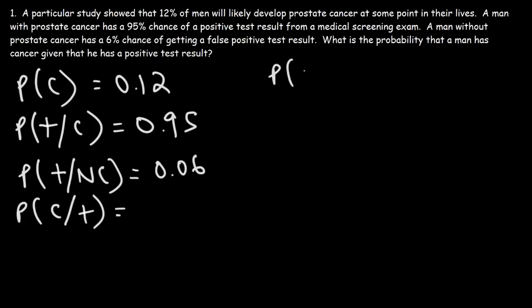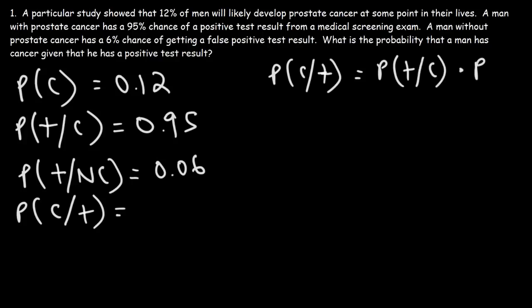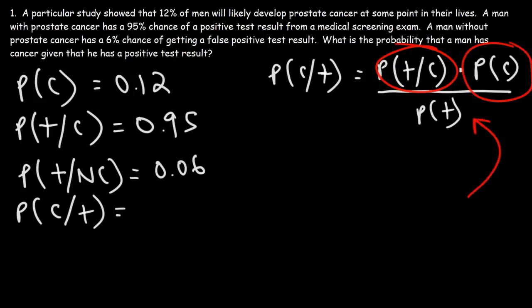So let's write down what we know. P(cancer) = 12% or 0.12. The probability of a positive test result given the person has cancer is 95% or 0.95. The probability of a positive test result given the person does not have cancer is 6% or 0.06. Using Bayes' Theorem, P(cancer|positive) equals the reverse conditional probability — P(positive|cancer) times P(cancer) — divided by P(positive). We have the first two values, but we need to find P(positive). A tree diagram will be very helpful here.